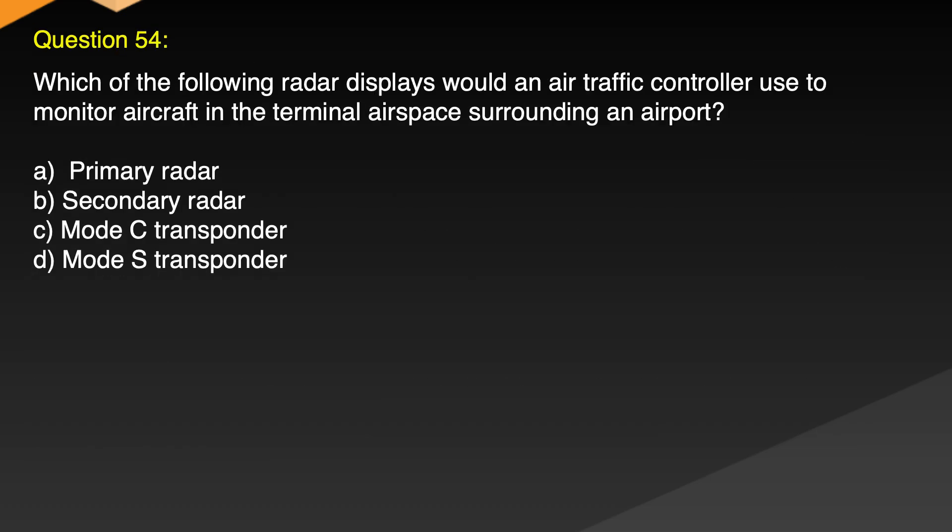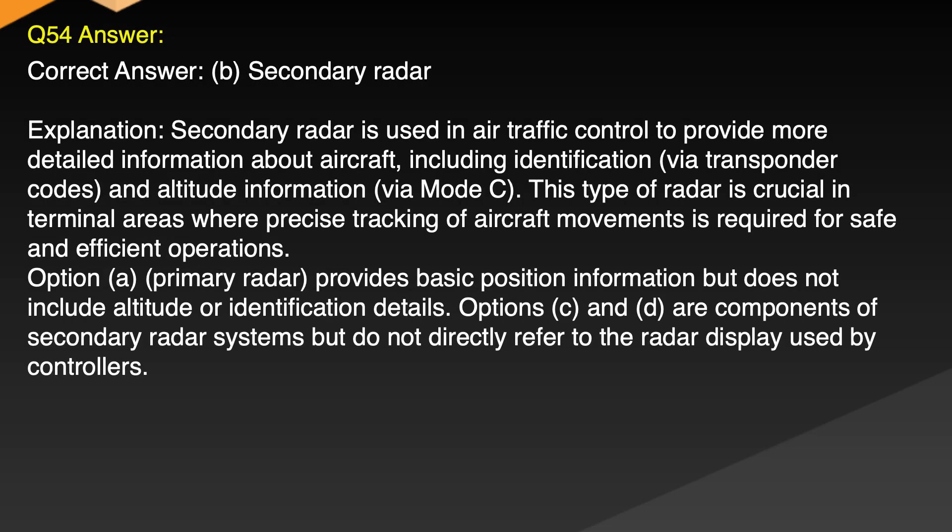Question 54. Which of the following radar displays would an air traffic controller use to monitor aircraft in the terminal airspace surrounding an airport? A. Primary radar. B. Secondary radar. C. Mode C transponder. D. Mode S transponder. Correct answer: B. Secondary radar.